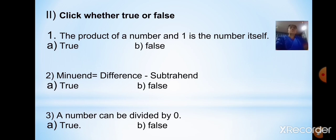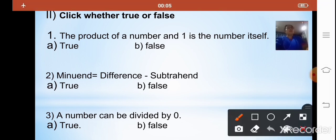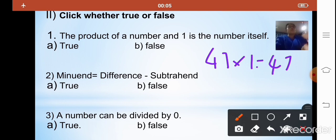Now click whether true or false. The first statement: the product of a number and 1 is the number itself. For example, 47 × 1 = 47, which is the number itself. So the answer is true.